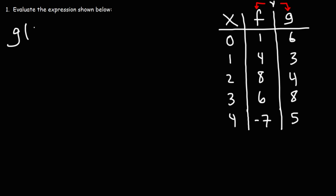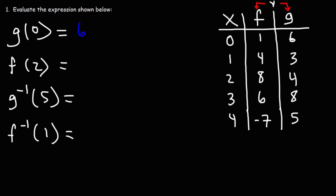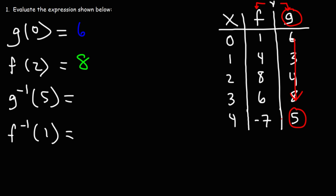Go ahead and try these problems: g of 0, f of 2, the inverse of g of 5, and the inverse of f of 1. So g of 0 — looking at g, x is 0, the y value is 6. f of 2 — x is 2, looking at f, this corresponds to a y value of 8. The inverse of g of 5 — the 5 is not an x value, it's a y value; we're looking for the x value, which corresponds to 4. The inverse of f of 1 — looking at f, the y value is 1, the corresponding x value is 0.